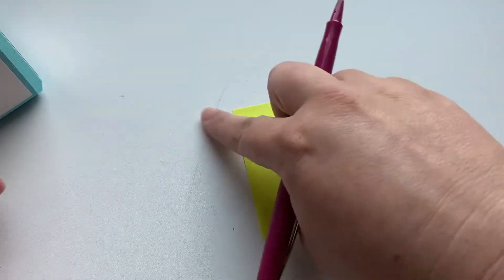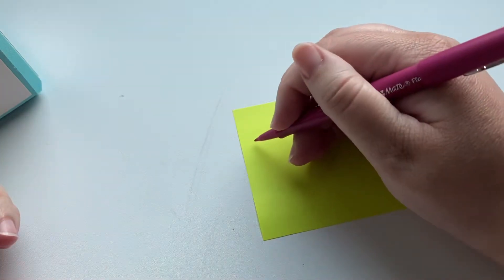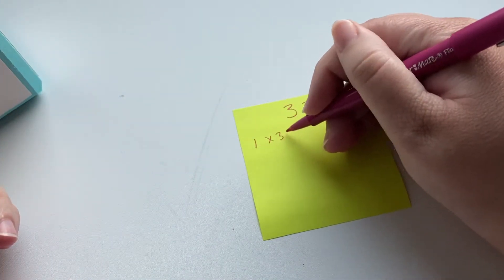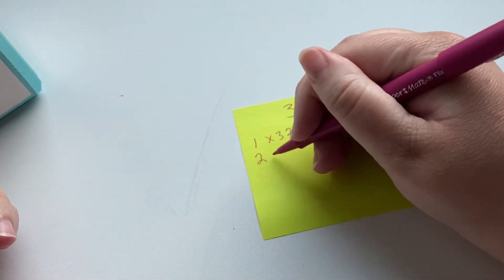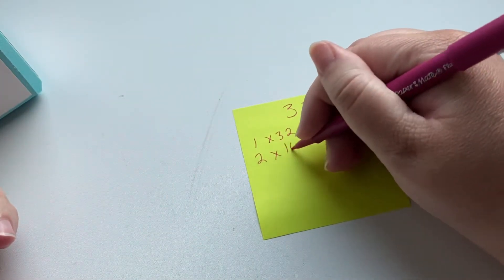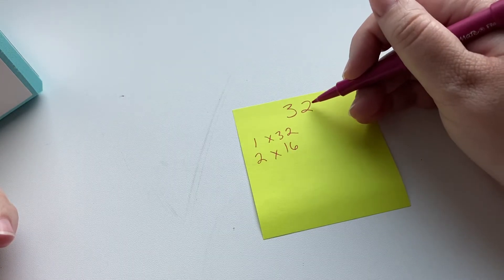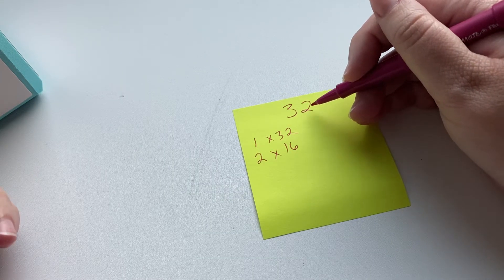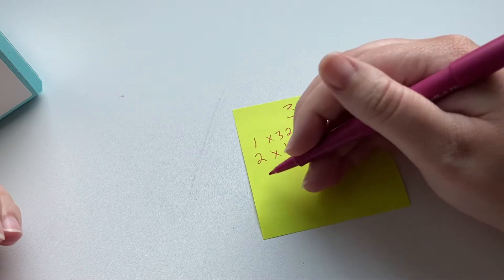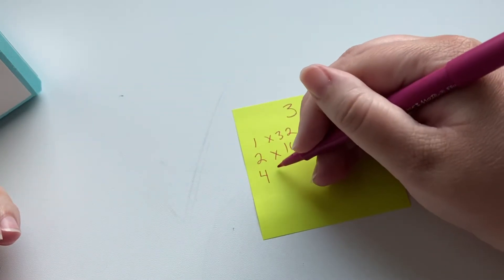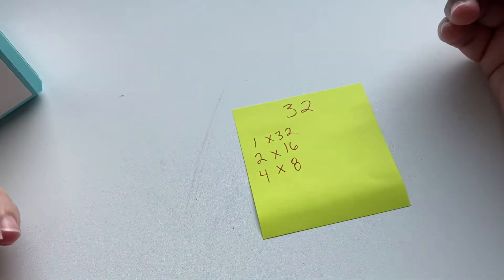Let's do one that might have some more. Now, we know here that we have 1 times 32, and it's an even number, so it's going to be 2 times 16. 3, we know 30 and 33 are factors, because 10 times 3 is 30, and 11 times 3 is 33, so it can't be 3. Let's go with 4, because we know 4 times 8 equals 32.